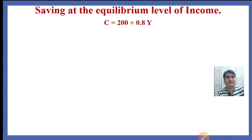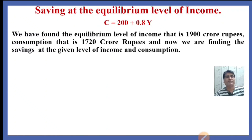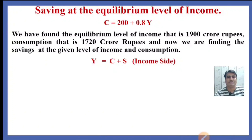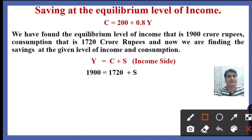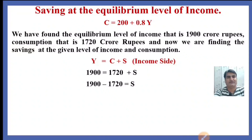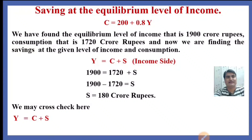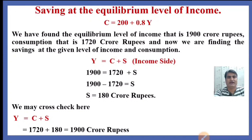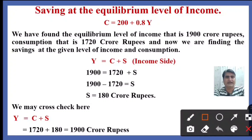What would be the saving at the equilibrium level of income? We found the equilibrium income of 1,900 crore rupees and consumption of 1,720 crore rupees. Using the identity income equals consumption plus saving, savings equal 1,900 minus 1,720, which is 180 crore rupees. We can cross-check: 1,720 plus 180 equals 1,900 crore rupees, confirming our result.